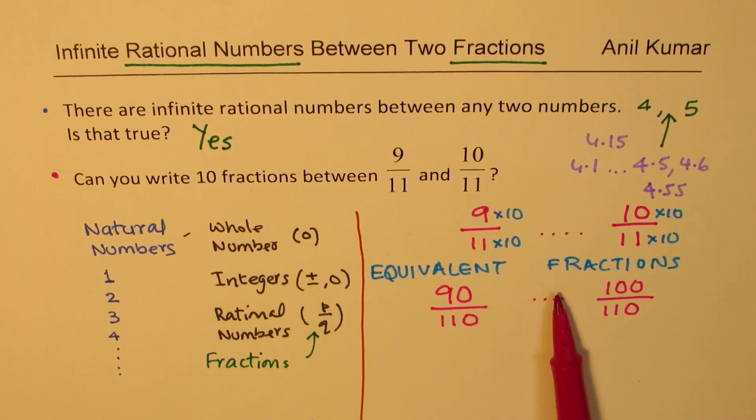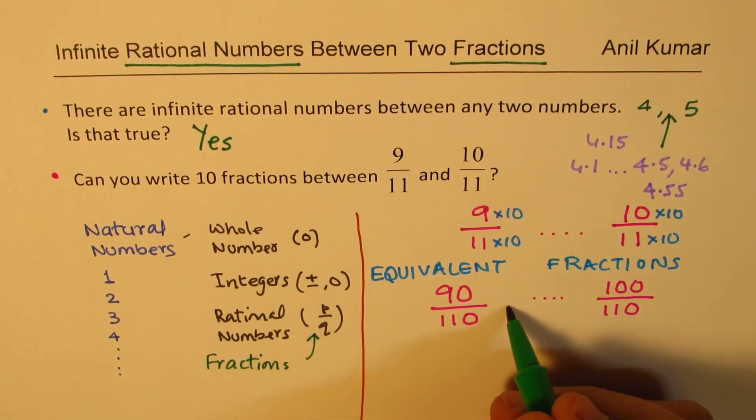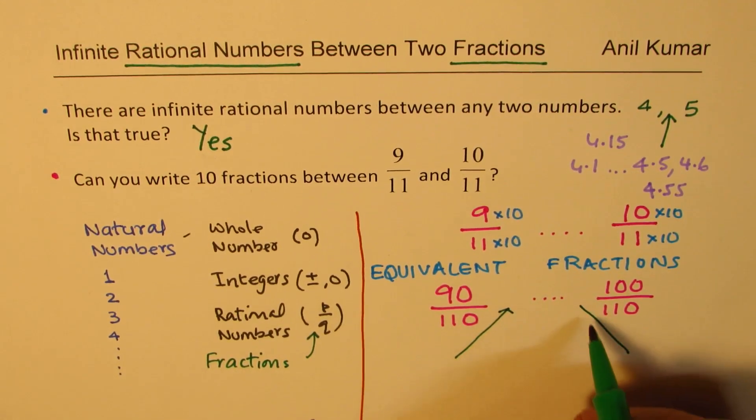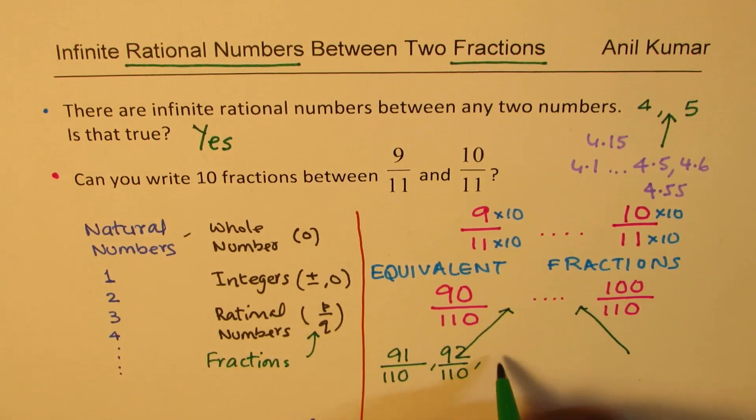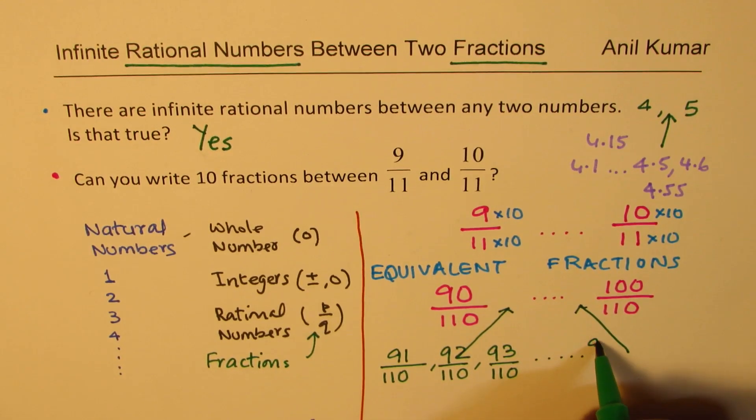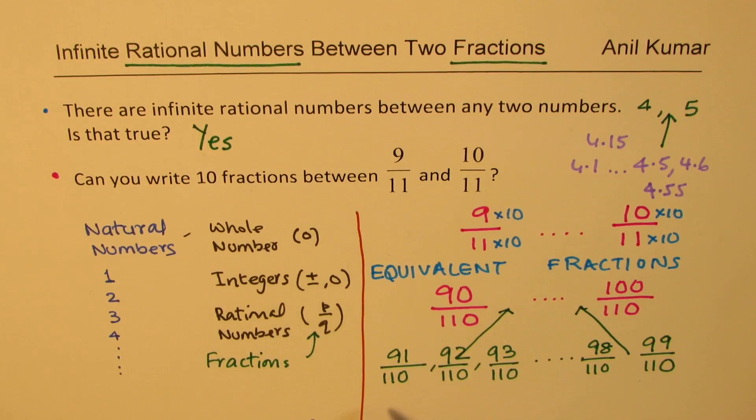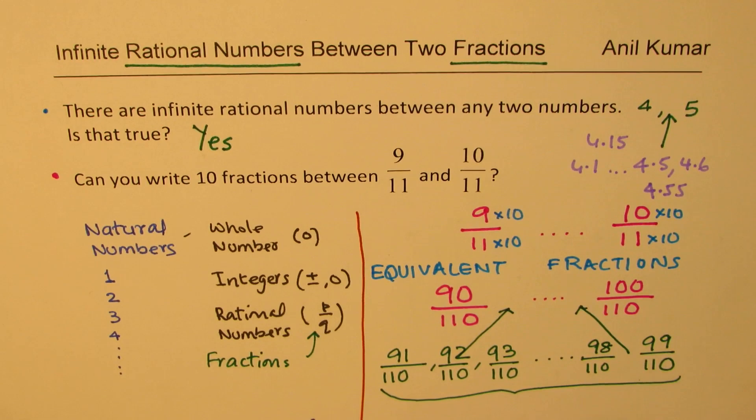91, 92, 93, 94, 95, 96, 97. So, I am going to place these numbers. So, from here to there, I am going to place numbers like 91 over 110, 92 over 110, 93 over 110, and so on, till 98 over 110, and 99 over 110. So, what have I done? I have 9 numbers for you. Why 9? I wanted 10.